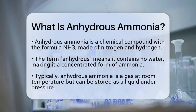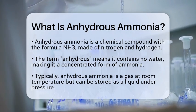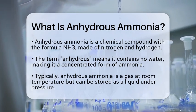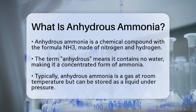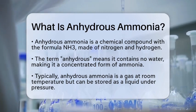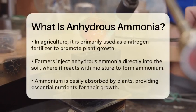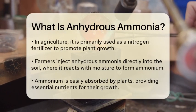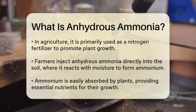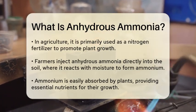Anhydrous ammonia is a chemical compound composed of nitrogen and hydrogen, with the formula NH3. The term anhydrous indicates that it contains no water, making it a concentrated form of ammonia. This compound is typically found in a gaseous state at room temperature, but can be stored as a liquid under pressure.